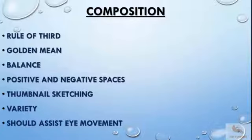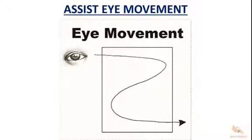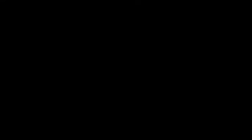Variety should be there to generate interest. The composition should use variety in the form of shapes, sizes, and color. The composition should assist eye movement, which means there should be some kind of flow. The objects should be placed in a rhythmic way.